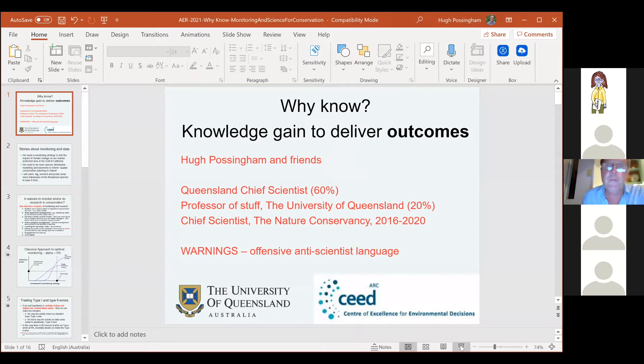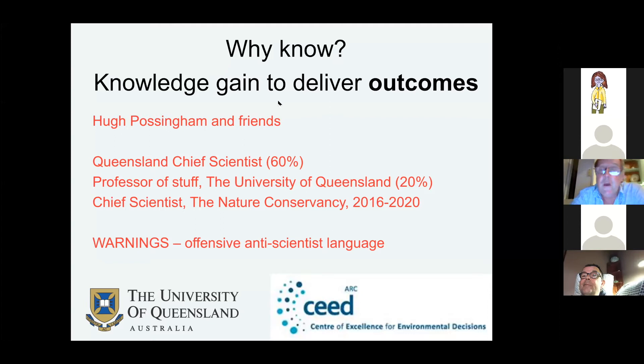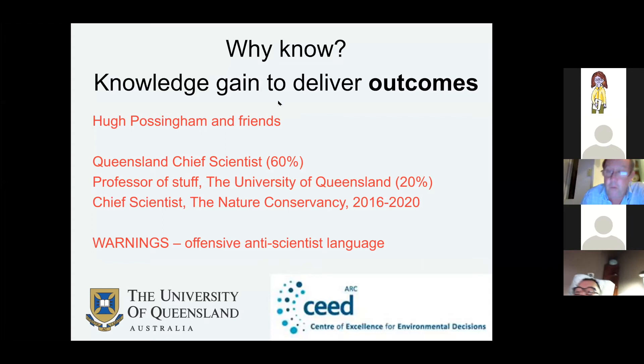I'm going to talk about one of my favourite topics — with the warning that if you love science for science's sake, I might say something that's going to offend you. I'm talking about the value of science, the value of monitoring, the value of evaluation, the value of recording stuff — but purely in the context of conservation outcomes. This is a talk about what does science and monitoring do to deliver outcomes on the ground, things like saving species. At times I will have some slightly anti-scientist language.